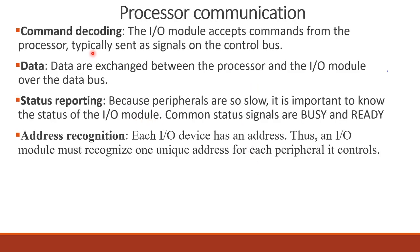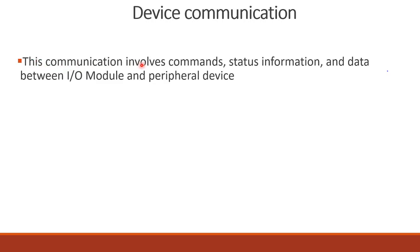After processor communication, command decoding is performed for read and write operations. Then data exchange occurs, followed by status reporting and address recognition. For device communication, the IO module communicates commands, status, and data between the IO module and peripheral device. Control, status, and data are exchanged in this communication.